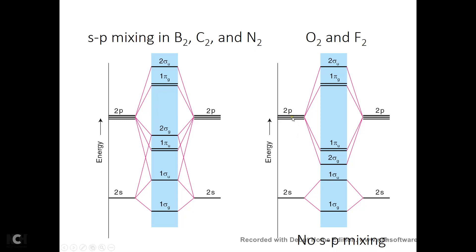Now let's look at the P electrons — four electrons here and four electrons here. The 2pz and 2pz do head-to-head interaction forming a sigma bond. Then 2px and 2px do shoulder-to-shoulder giving a pi bond, and 2py and 2py give a pi bond. We can put six electrons in the bonding orbitals, and we have two more that must go into the anti-bonding pi orbitals. Six bonding electrons minus two anti-bonding electrons divided by two gives a bond order of two. In fluorine, you have six bonding electrons and four anti-bonding electrons — six minus four equals two, divided by two equals one. The bond order in fluorine-2 is one.